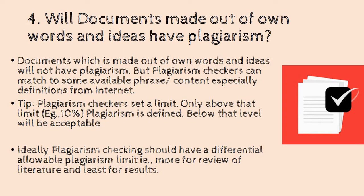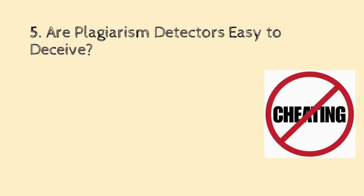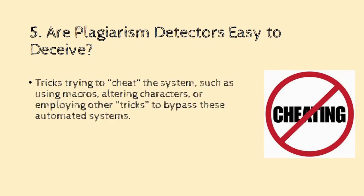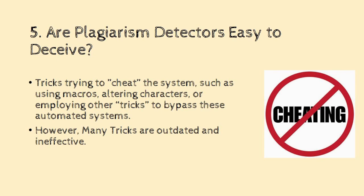Are plagiarism detectors easy to cheat? Tricks to cheat the system — such as using macros, altering characters, or employing other methods to bypass automated systems — are available on the internet. You can search for hacking tricks for specific software on YouTube and find many. However, many of those tricks are outdated and ineffective, as plagiarism checker software continuously monitors and adjusts for them. Beyond all this, trying to deceive plagiarism detectors is not advisable.